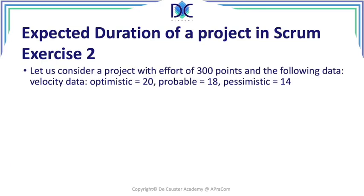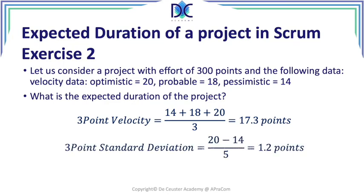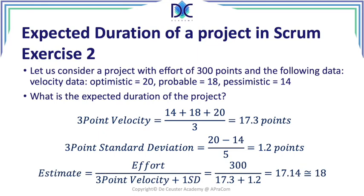There are different ways to calculate velocity — for example, based on the last three sprints. We can look at an optimistic, a probable, and a pessimistic approach: optimistic gives a higher velocity, pessimistic a lower velocity. We can also calculate the expected project duration using three-point estimation. The standard deviation is (20 minus 14) divided by 5, giving 1.2 points. For about 80% certainty, we take the three-point velocity plus one standard deviation, which gives approximately 17.14 sprints — and rounding up, we estimate 18 sprints.